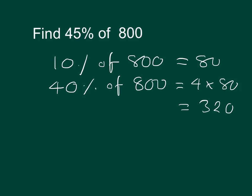We've now got 40%, but we need 45%. To work out the 5%, remember 5% is half of 10%. So 5% equals a half of 80, which is 40. So finally, 45% is 40% plus 5%, so it's 320 plus 40, is 360. So 45% of 800 is 360.